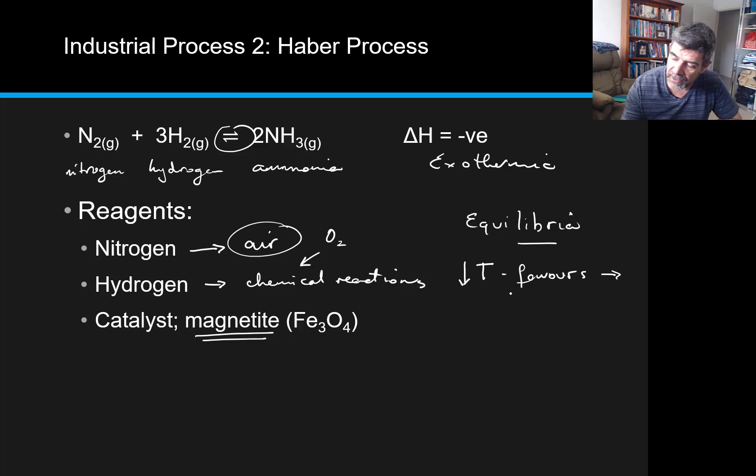So often, we use a compromise. Something that sits somewhere between a high temperature which increases the reaction rate, but not too high a temperature that drives the reaction too far to the left.